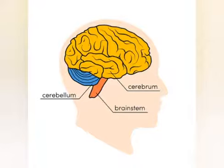The medulla controls activities such as heartbeat, breathing, swallowing, and sneezing. All parts of the brain — the cerebrum, cerebellum, and medulla — function to control all types of movements and activities in our body.